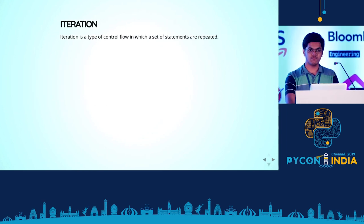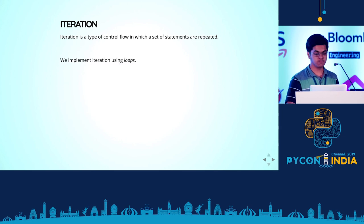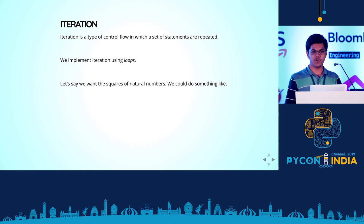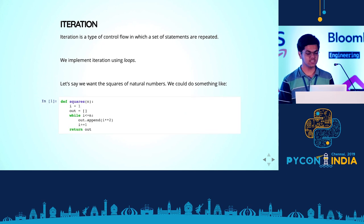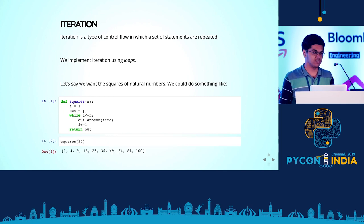To start off with, we all know what iteration is — we just want to repeat a bunch of statements, and the way you do that in code is you use loops. As an example, let's say we want to iterate over the squares of natural numbers. One very naive way to do this would be to write a function with a simple while loop. You run it, you get your list of squares — you could do it using a for loop or a list comprehension, and in the end you'll get a list of squares.